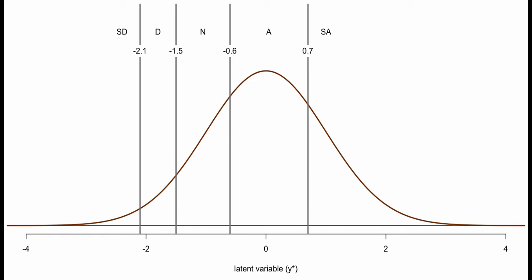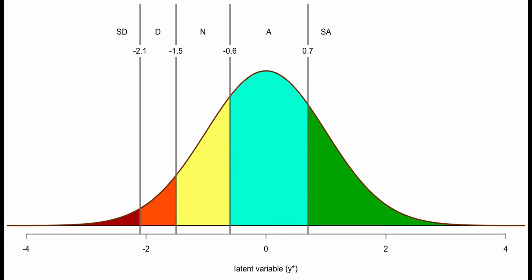For this picture, the tau cuts are placed at negative 2.1, negative 1.5, negative 0.6, and 0.7. Someone with a latent variable response between negative 1.5 and negative 0.6 would indicate they are neutral about liking chocolate ice cream. Each region of the bell curve is shaded, and the area of each shaded region indicates the proportion of people predicted to respond in that category.